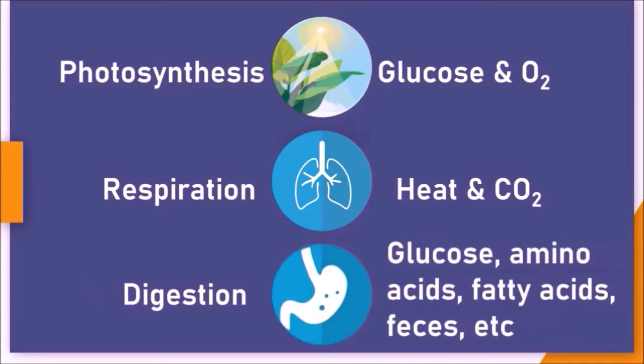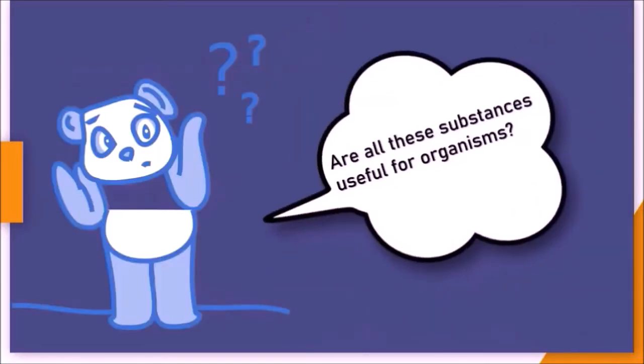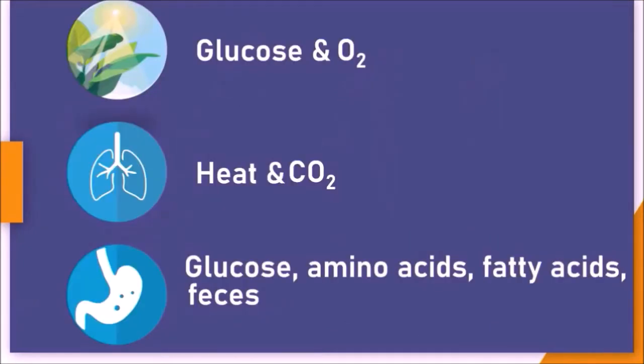As a result of digestion, several substances like glucose, amino acids, fatty acids, glycerol, feces, etc. are formed. Are all these substances useful for organisms? Let us see. The glucose and oxygen which are formed as a result of photosynthesis may be utilized by the plant once again.